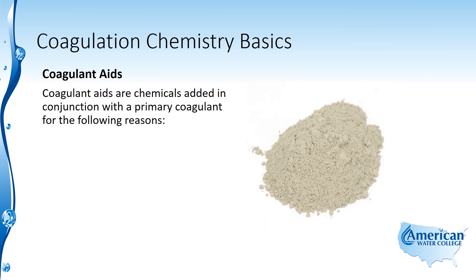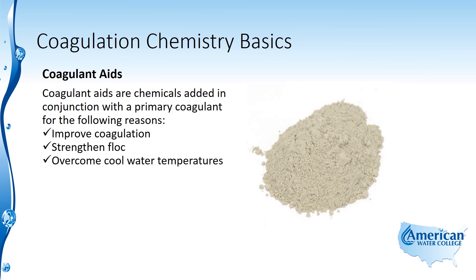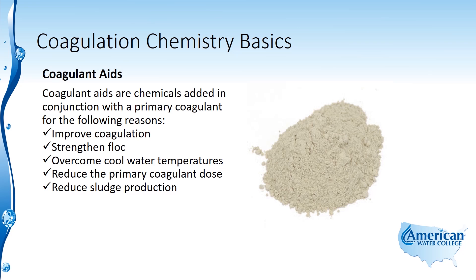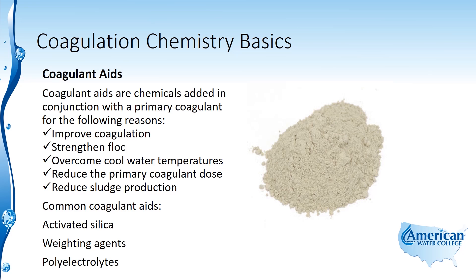We also add other chemicals to aid the coagulation process, and we call those coagulant aids. They are chemicals added in conjunction with a primary coagulant to improve coagulation, to strengthen the floc, to overcome cool water temperatures, to reduce the amount of primary coagulant required, and to reduce the production of sludge. The common aids used are activated silica, weighting agents, and poly electrolytes.